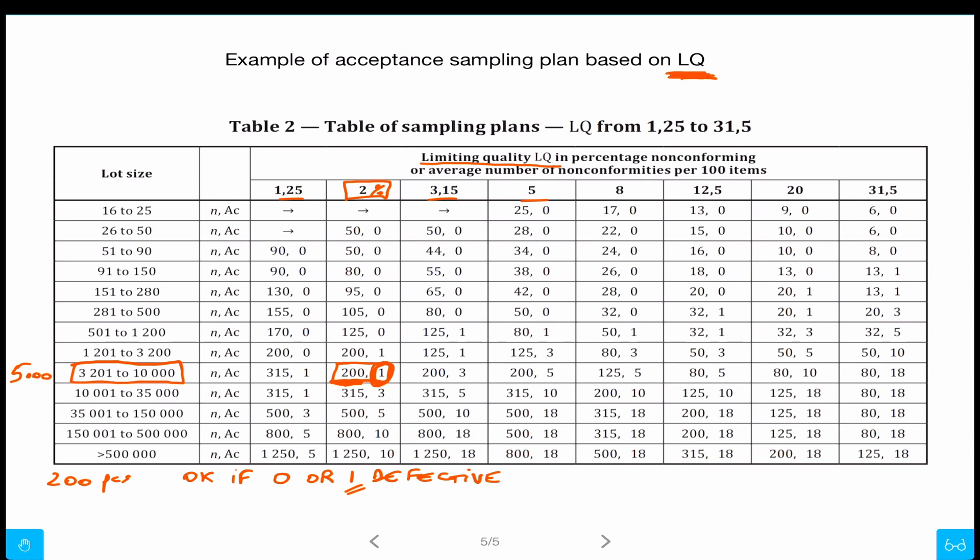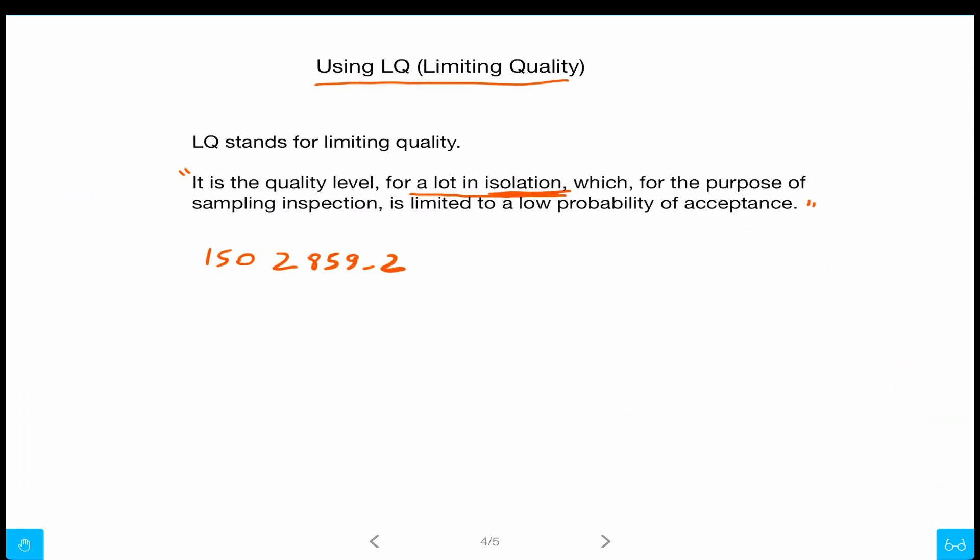Two or three or five or ten, whereas if you pick the AQL, the other approach, two would be accepted, three would be accepted, four would be accepted, five would be accepted. It's very different.